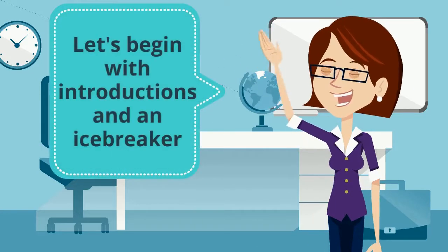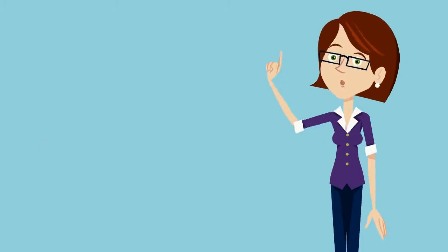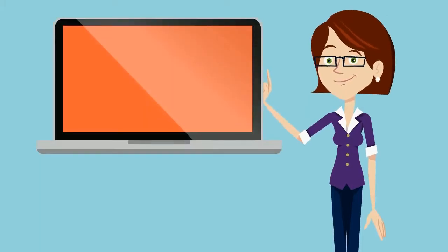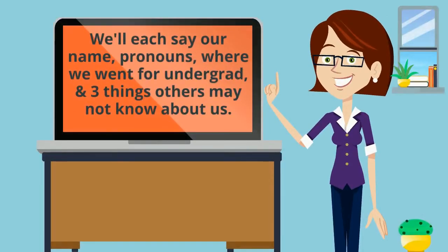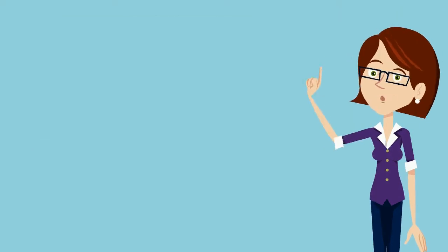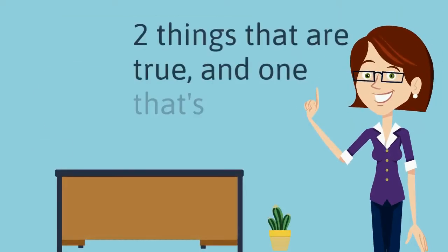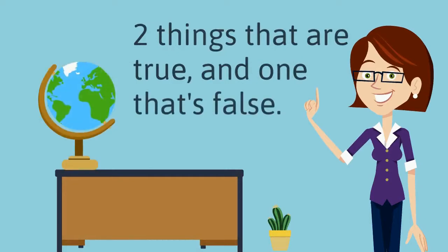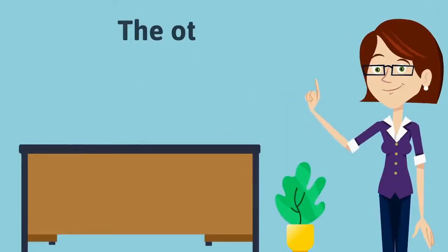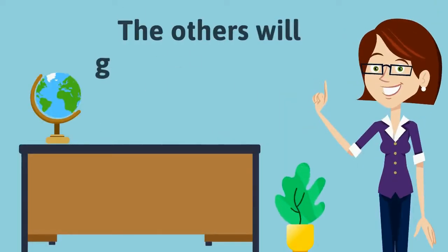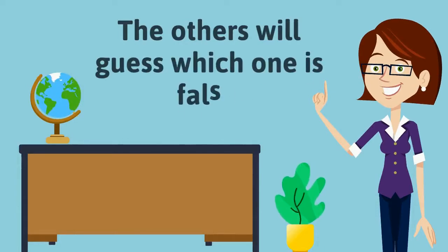Let's begin with introductions and an icebreaker. We'll each say our names, pronouns, where we went for undergrad, and three things others may not know about us — three things that are true and one that's false. The others will guess which one is false. I'll start.